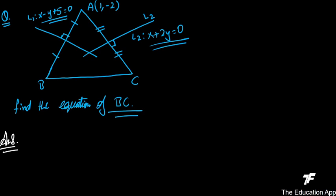To find the equation of BC, let us assume coordinates of B as (x1, y1) and C as (x2, y2). If we can find B and C, we can find the equation of BC using two-point form. Note that the intersection point of L1 and L2 is the circumcenter O of the triangle.